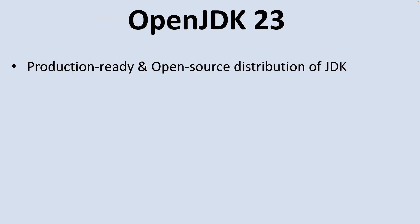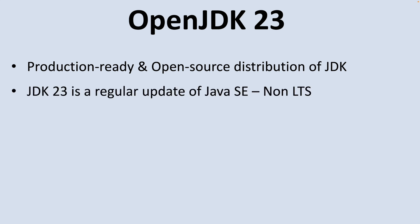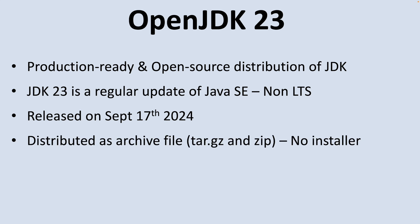Firstly, let's understand briefly about OpenJDK. OpenJDK is a production-ready and open-source distribution of the Java Development Kit, or JDK. JDK 23 is a regular update of the Java SE platform. It is a non-long-term support release of Java SE. JDK 23 was released on September 17th, 2024, and it is distributed as archive files such as .tar.gz and .zip for macOS — no installer.